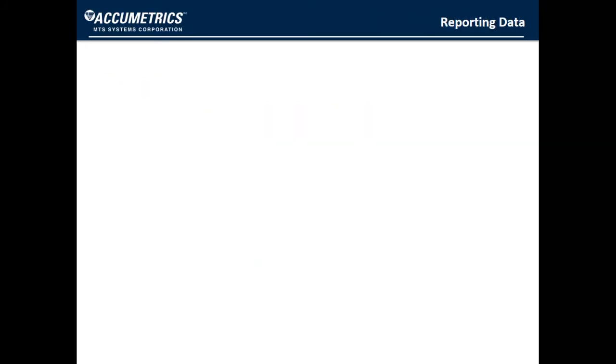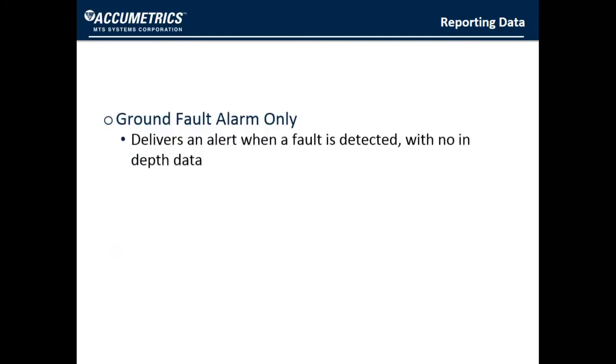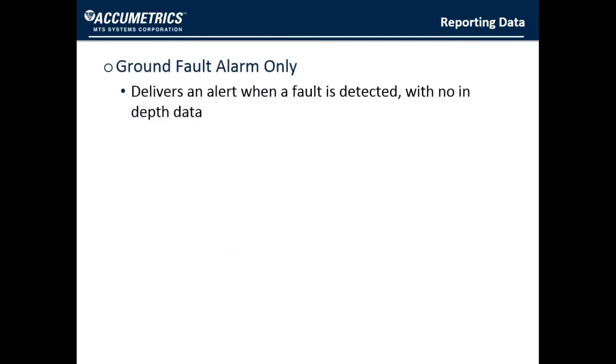So finally, let's look at the possible interfaces for reporting data to the operator. At the very minimum, you need the ground fault alarm. And with a classical ground fault system, that is in fact what you get. However, you get no other information, so there isn't anything to help you understand if the alarm is legitimate or if you should shut down.